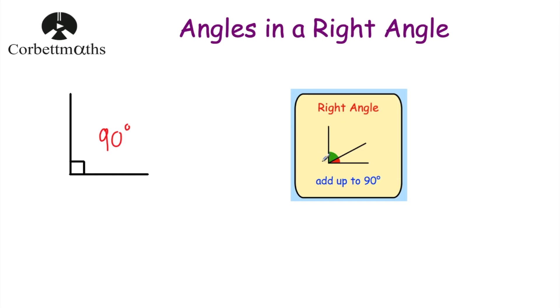If we have a look at this diagram we've got this green angle and this red angle. These two angles would add together to be 90 degrees because it's a right angle. So it's very important to know that in a right angle the angles add together to be 90 degrees.